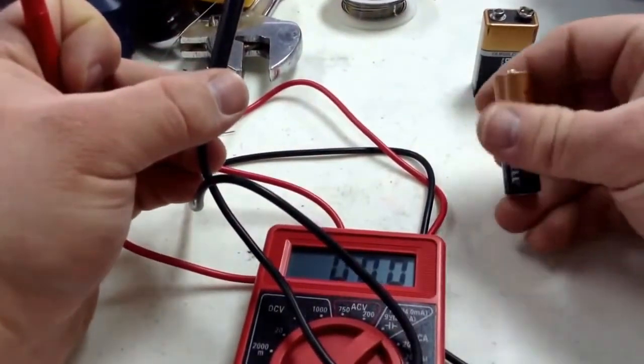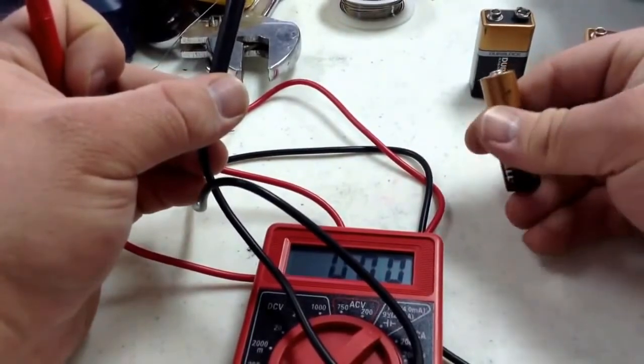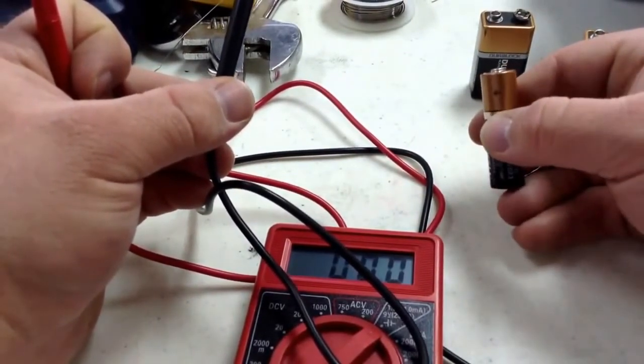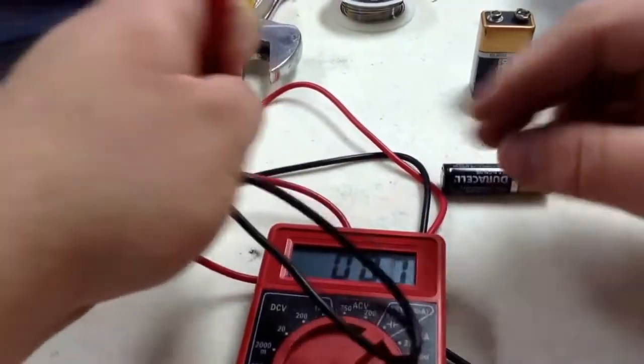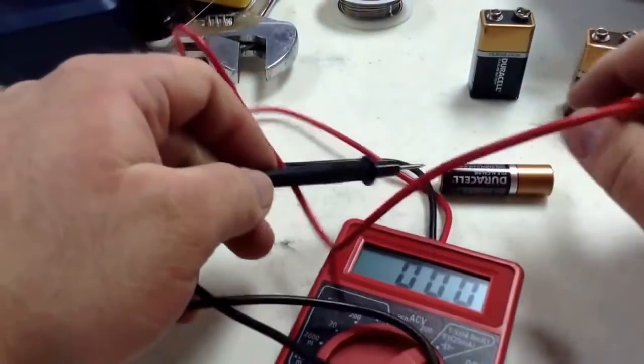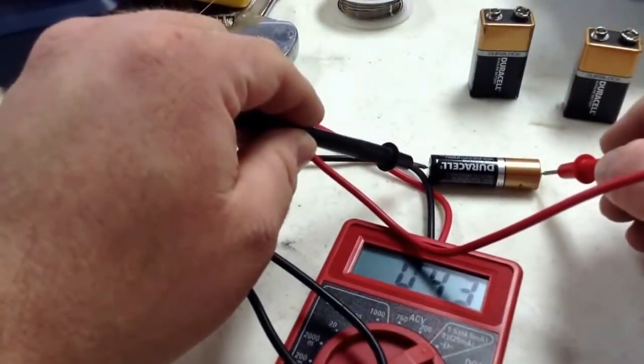And then you do the same thing with a double A or AAA. Make sure you find the marked side, this being the positive. So we'll switch our leads, and this should read 4mA.